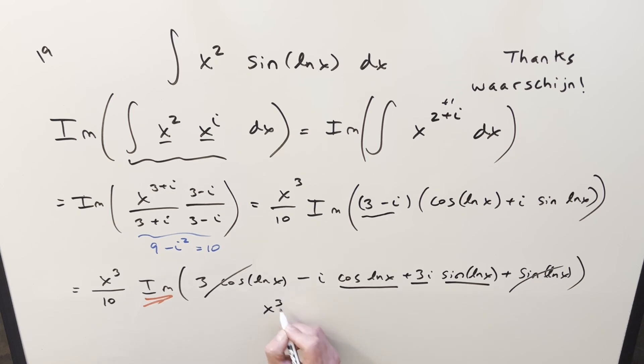So let's just clean it up. So for the final solution, we have x cubed over 10 times 3 sine ln x minus cosine ln x, add a plus c, and that's it. Okay, there you go. Nice problem complexifying the integral. Thanks everyone for watching. Have a good day.